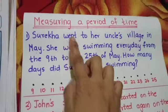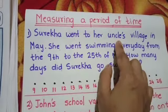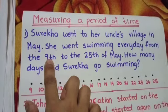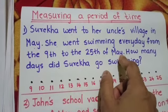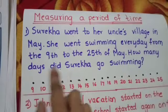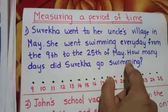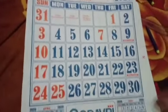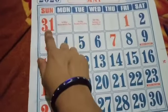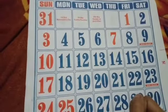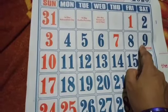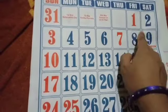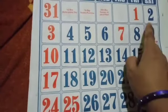What they are telling here: Surekha went to her uncle's village and there she was going swimming every day from 9th to the 25th of May. We have to find how many days did Surekha go for swimming. How many days are there in the month of May? 31 days. So she went swimming from 9th till 25th, and here we have to count the days from 9th till 25th.